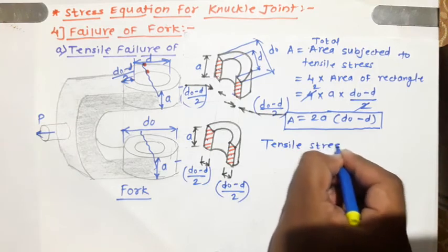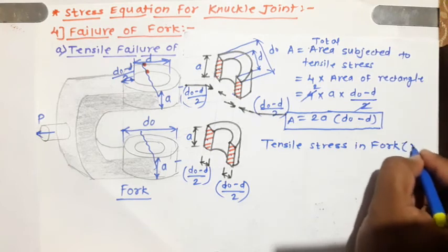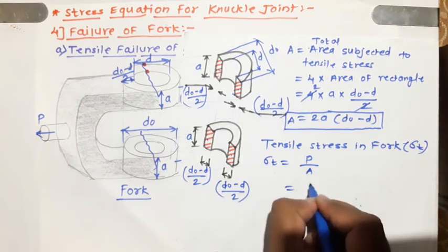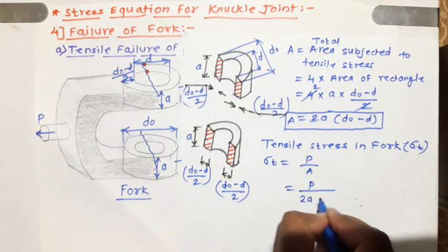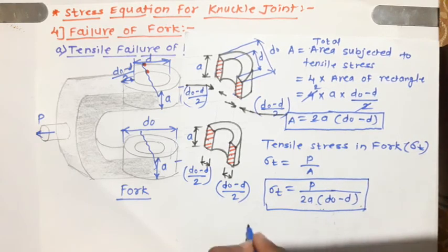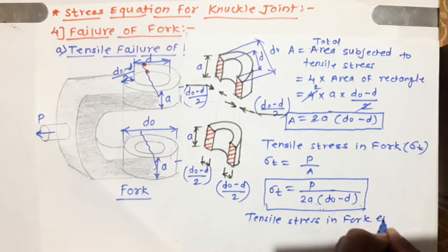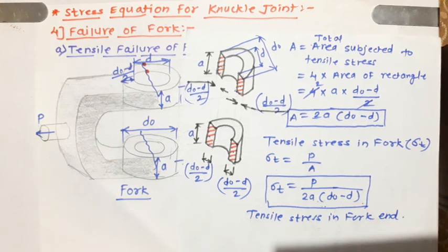Now let us write the equation of tensile stress in the fork. Tensile stress, denoted by σ_t, is given as σ_t = P / A, where the area A we have just derived is 2a(D_O - d). Therefore, σ_t = P / [2a(D_O - d)]. This is the equation of tensile stress in the fork end. Similarly, we can derive the equation of shear stress in the fork.